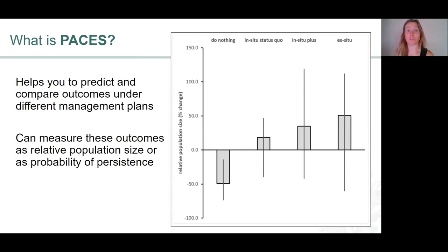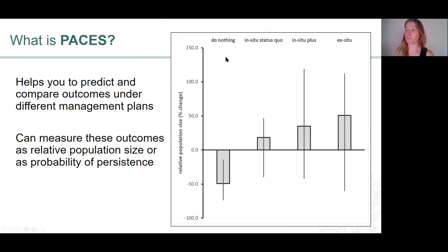PACES helps you to make predictions and then compare the outcomes under different possible management plans for a species, and this includes both in-situ and ex-situ management plans. For example, this graph shows a possible output from the tool — predictions about what will happen to a species under four different scenarios, including a do-nothing baseline scenario and three different management plans.